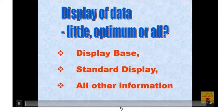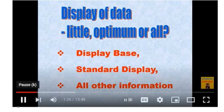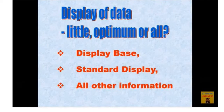The content available on the display of the ECDIS falls into three categories: Display Base, Standard Display, and Display on Request — also referred to as Display Base, Standard Display, and All Other Information.